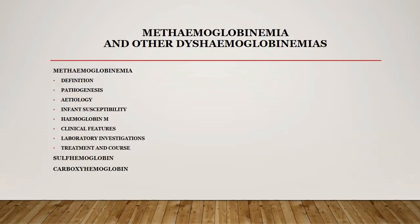In today's topic I am going to talk predominantly on methemoglobinemia — the definition, the pathogenesis, different etiological factors, the different infant susceptibility factors, about hemoglobinemias, about hemoglobin M, the clinical presentation, laboratory investigations, and the treatment protocol. In other dyshemoglobinemias I'll be speaking about sulfhemoglobin and carboxyhemoglobin.